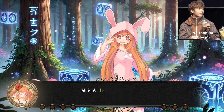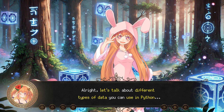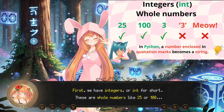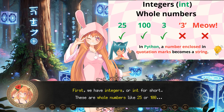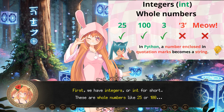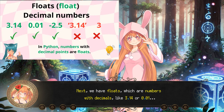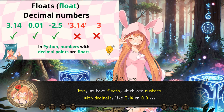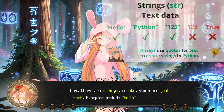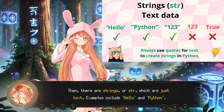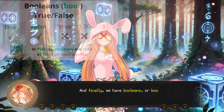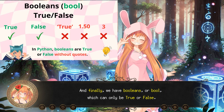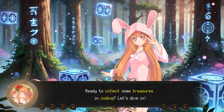Alright, let's talk about different types of data you can use in Python. First, we have integers, or int for short — these are whole numbers like 25 or 100. Next, we have floats, which are numbers with decimals, like 3.14 or 0.01. Then there are strings, or str, which are just text — examples include 'hello' and 'python'. And finally, we have booleans, or bool, which can only be True or False. Ready to collect some treasures in coding?